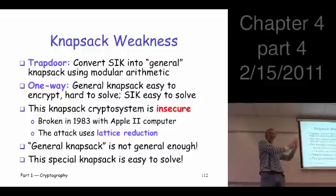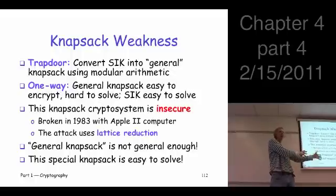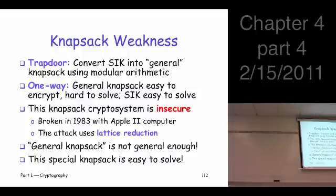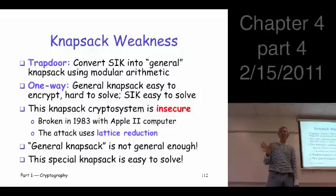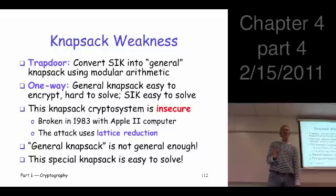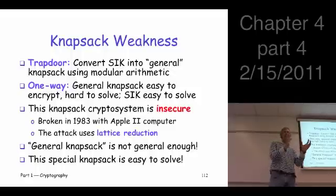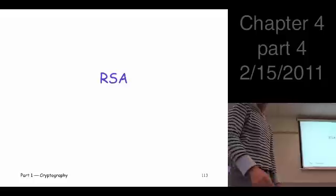The strange thing about the knapsack is that people understand where the weakness lies, and they've actually come up with other versions — so-called iterated knapsack — which are secure as far as anyone knows, with no known efficient attacks. But people are still unwilling to use those more secure versions. Why? Partly because RSA does everything you want, and partly because anything with the name 'knapsack' still leaves a bad taste in people's mouths.